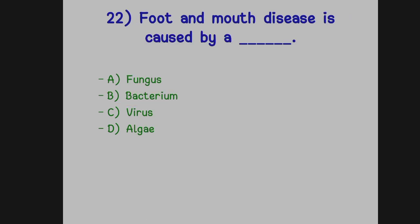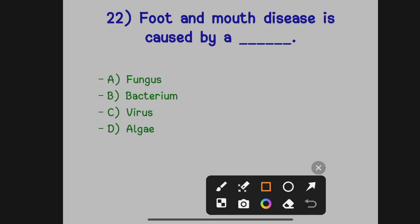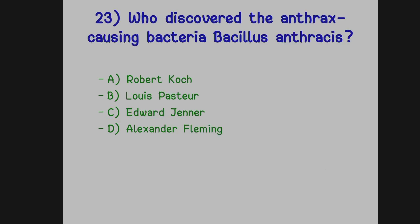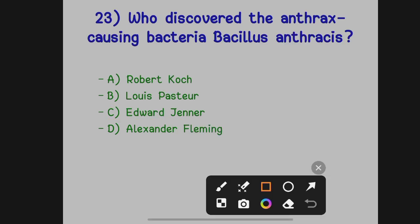Foot and mouth disease is caused by a dash. Option A: Fungus. Option B: Bacterium. Option C: Virus. Option D: Algae. The correct answer is Option C, virus — foot and mouth disease is caused by a virus.